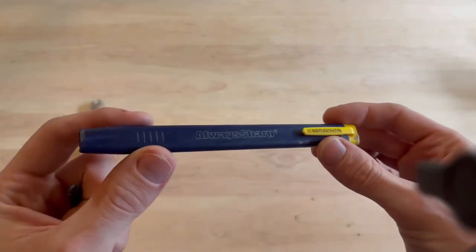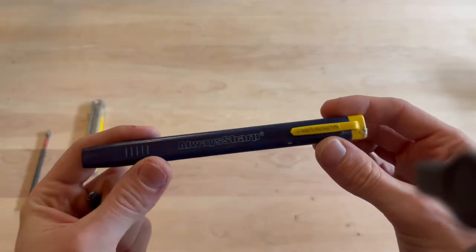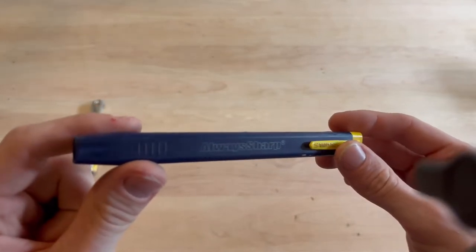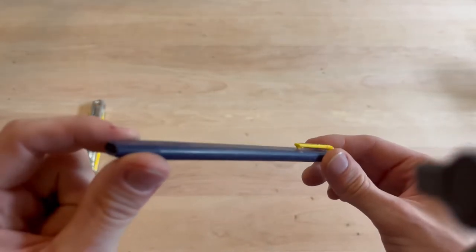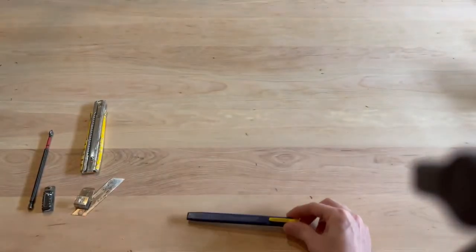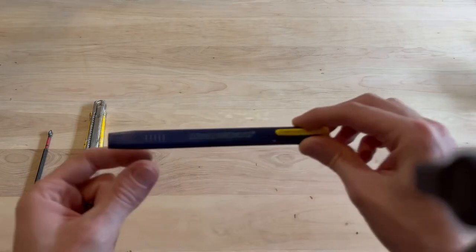Alright, so first up on our list is the Always Sharp Pencil by Swanton. Now what I love about this thing right off the bat is that it has the design of a carpenter pencil, so it's flat, it's not round, it won't roll away on you when you set it down.